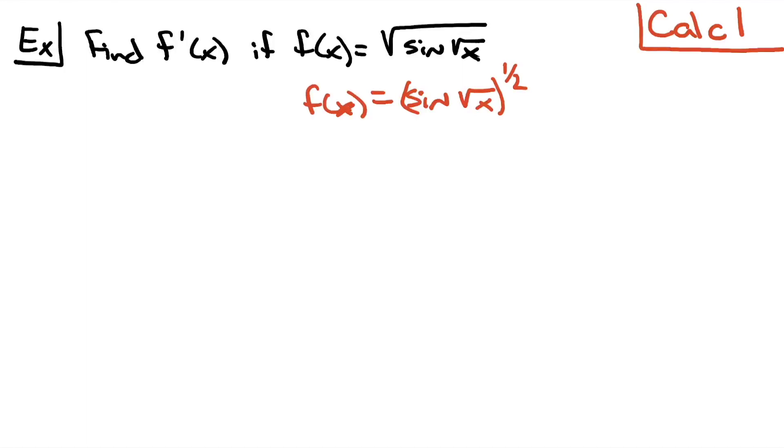I still, you know, no calculus involved there, just rewriting it so that I can clearly see I have an inside portion to this function. And then I have an outside portion, something being raised to the 1 half power. That's going to indicate to me then that I've got chain rule going on.